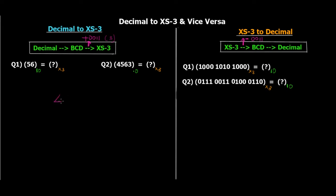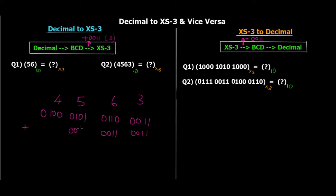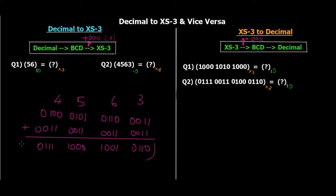Let's try a longer example: decimal 4563. Step 1 — represent each digit with its 4-bit binary equivalent: 3 is 0011, 6 is 0110, 5 is 0101, 4 is 0100. Step 2 — add 0011 to each block. 3+3=6 → 0110; 6+3=9 → 1001; 5+3=8 → 1000; 4+3=7 → 0111. So the XS3 code is 0111 1000 1001 0110. Pretty straightforward — just represent each decimal digit in 4-bit BCD, then add 3 in binary to each block.